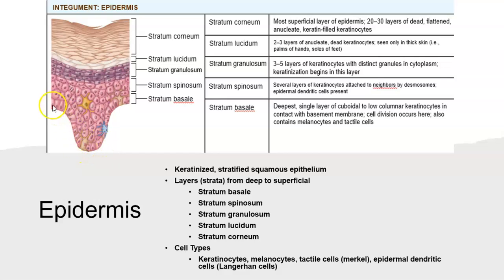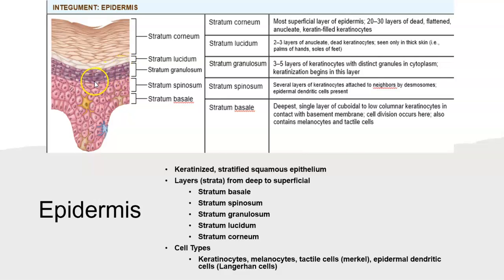The cells closest to the surface are extremely flat and squamous, but in the deeper layers, especially the very bottom base layer, the cells are not flat at all — yet we still classify them as stratified squamous epithelium. The deepest layer is called the stratum basale, then we have several layers of stratum spinosum, which contains many keratinocytes in multiple layers. The next layer up is three to five layers of keratinocytes called the stratum granulosum.